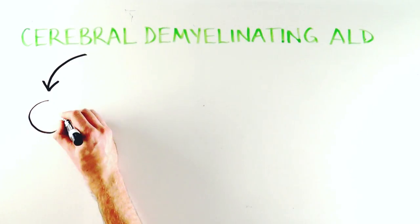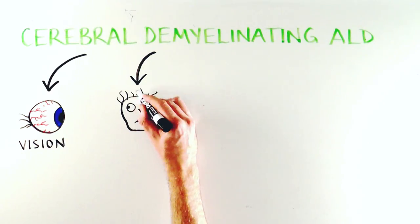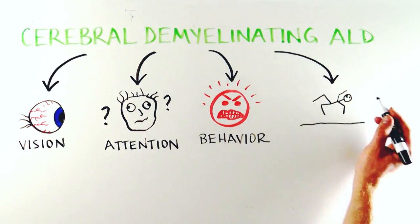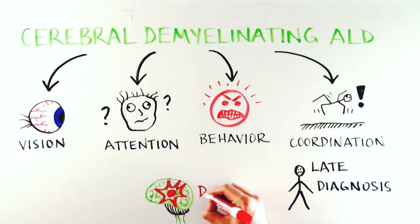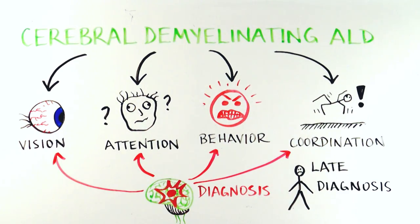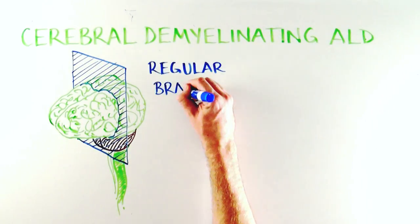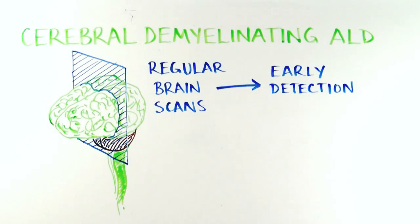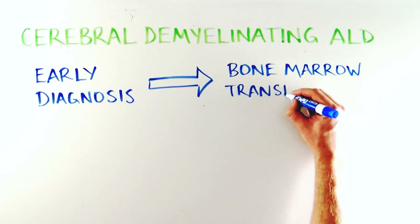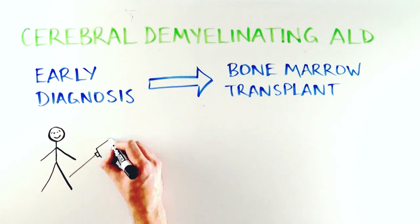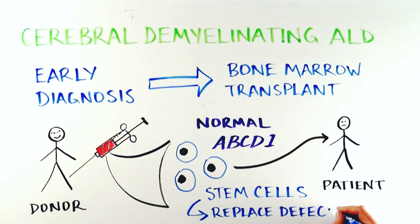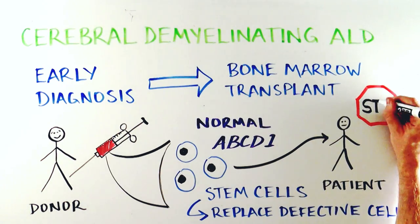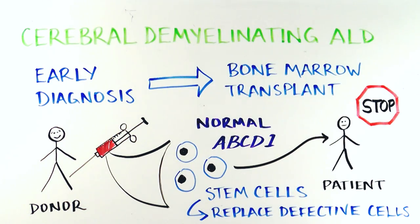This leads to a myriad of different symptoms that may include problems with vision, attention, behavior, and coordination. Unfortunately, many boys with ALD are diagnosed late because symptoms do not appear until the damage to the brain is already quite large. Regular brain scans help doctors detect the onset of brain damage early. When diagnosed early, cerebral ALD can be stopped with a bone marrow transplant from a matched donor. The donor's bone marrow contains stem cells that don't have an ABCD1 mutation. These stem cells can replace the patient's defective white blood cells and stop the brain inflammation.